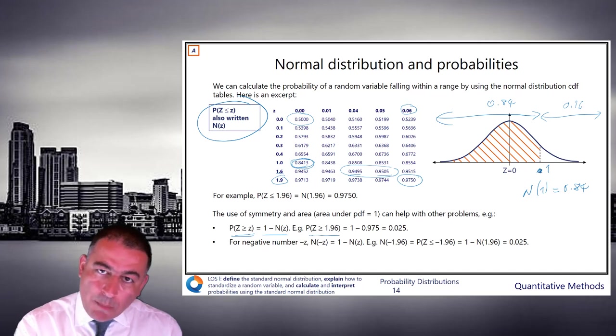So probability z is bigger than 1.96. Remember, that's just the top 2.5% tail. And you can see that that works. That's plus 0.025, which is 1 minus 0.975.